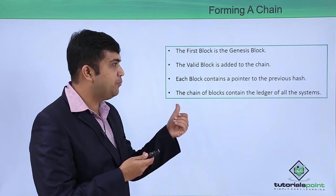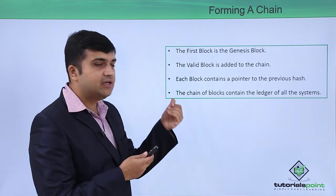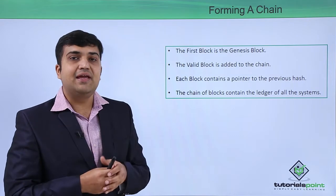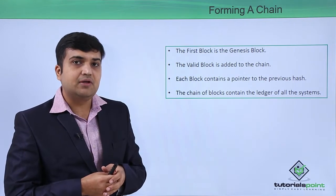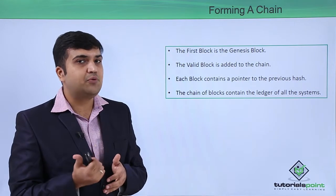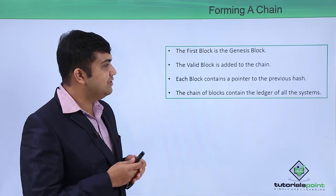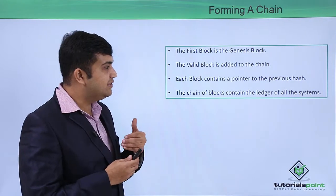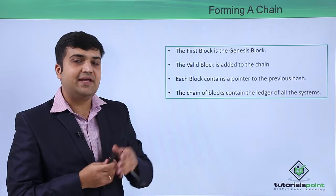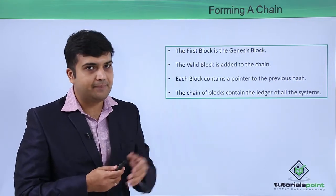The previous pointer of each block is pointed to the previous block. In the case of the genesis block, the previous pointer value is going to be 0. This is how the chain of blocks is formed, and we will have the entire copy of the ledger from the beginning of time.